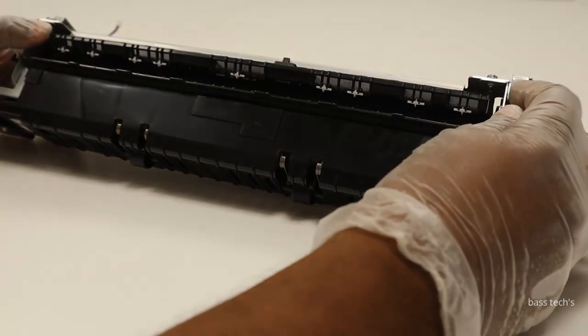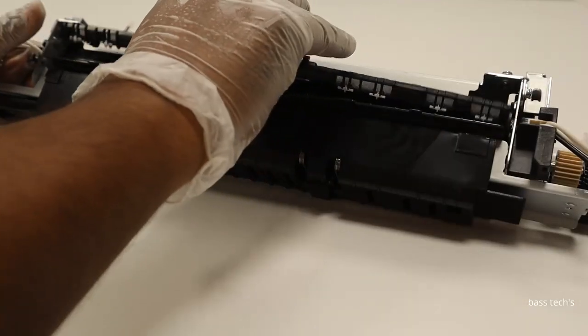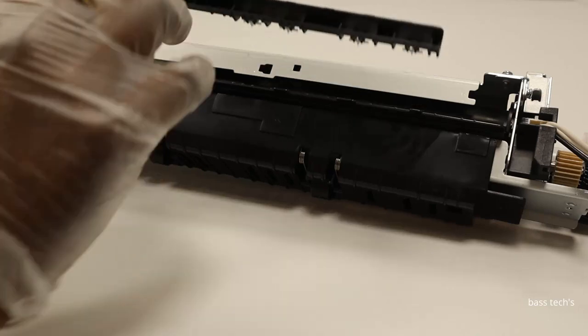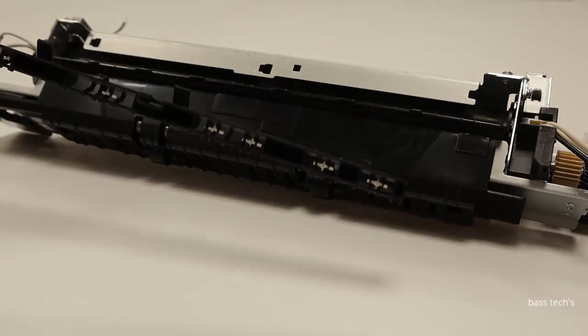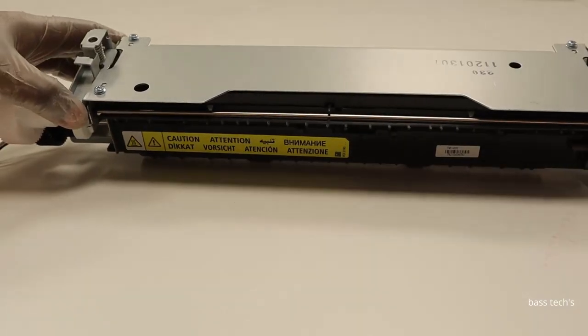Then we have to remove the guide by sliding it towards the right and take it off. This is a paper guide which will be in the fixing assembly. Now I have removed it, and this is the procedure for dismantling the fixing assembly.